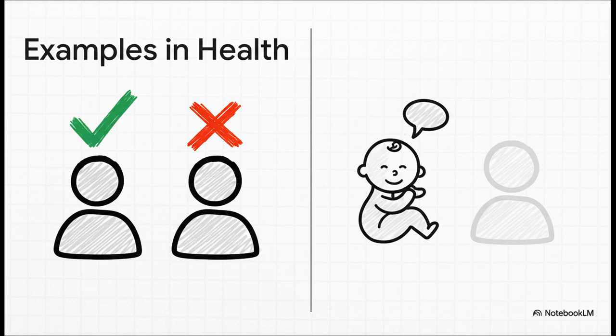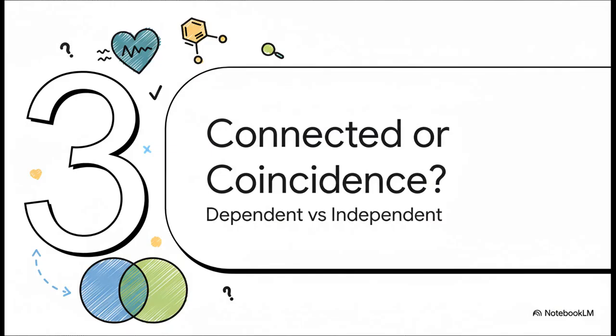But, you know, life isn't always that clean, right? What happens when things get a little messier? And that brings us right back to the core of our mystery. We've talked about events that can't happen together. But what about events that can? And when they do, do they actually affect each other? This is where we get to the big question. Are they connected or is it just a coincidence?